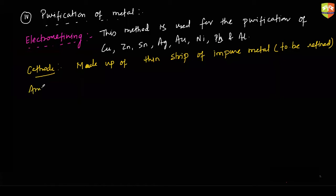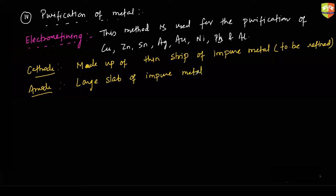The anode is a large slab of impure metal — again the same metal which is to be refined. So basically, both cathode and anode are made up of the same impure metal. Cathode is a thin strip and anode is a large slab comparatively.